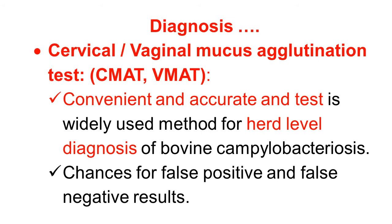A very important test is the cervical mucus agglutination test, called CMAT, or vaginal mucus agglutination test, called VMAT. These tests are very convenient, can be performed in the field, and are also very accurate, making them widely used methods for the diagnosis of bovine genital campylobacteriosis. However, as with other tests, false positives are also possible.